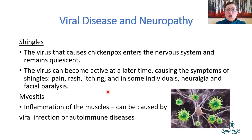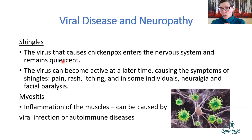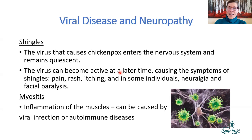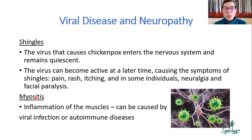Shingles: the varicella-zoster virus (which causes chicken pox) can enter the nervous system and remain quiescent. Later, when your immune system is stressed and tamped down, it can reactivate causing pain, rash, itching, and in some individuals neuralgia and facial paralysis. Myositis is inflammation in the muscles caused by viral infection or autoimmune disease, and can also cause neuropathy.